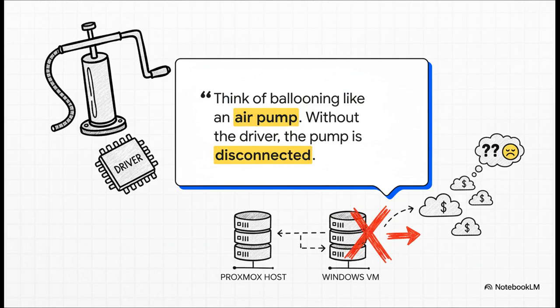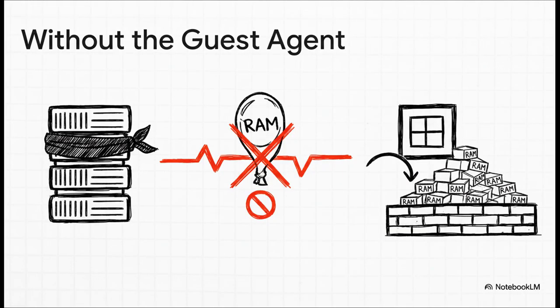A great way to picture this is like an air pump. Without that driver installed, the hose is just disconnected from the tire. The VM literally has no way to tell Proxmox, 'Hey, you know those 10 gigs you gave me? I'm not using them right now — you can have them back.' So from Proxmox's point of view, once it gives that RAM away, it's gone for good. Without the guest agent and its balloon driver, the whole system of communication breaks down. Proxmox has zero visibility into what's really going on inside the VM, memory ballooning is completely off the table, and unused RAM is never returned to the host — even if it's just sitting there as cache.